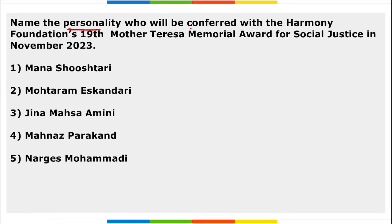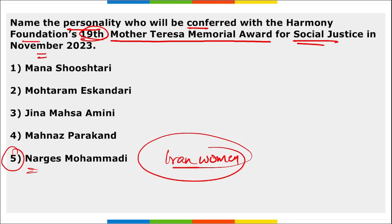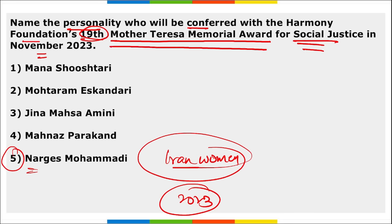Next, name the personality who will be conferred with Harmony Foundation's 19th Mother Teresa Memorial Award for Social Justice in November 2023. It is Narges Mohammadi. She is an Iranian woman fighting for the rights of Iranian women, honored with the 2023 Nobel Peace Prize. She will also be conferred with the Harmony Foundation's Mother Teresa Memorial Award for Social Justice. The 19th Mother Teresa Memorial Award is scheduled on 26th November in Mumbai, Maharashtra.